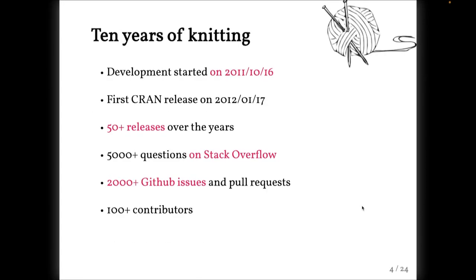Knitter has existed for a little over 10 years. Development started in 2011, and I made the first CRAN release in January 2012. Over these years, I have made more than 50 CRAN releases, and there have been more than 5,000 questions on Stack Overflow and more than 2,000 GitHub issues and pull requests. I would also like to thank all the Knitter contributors — there are more than 100 of them.